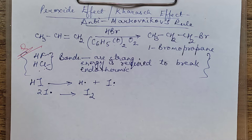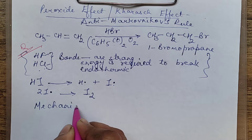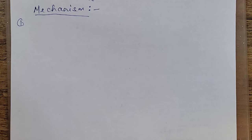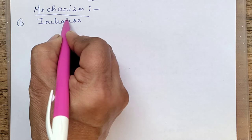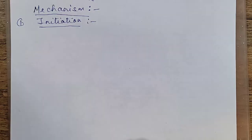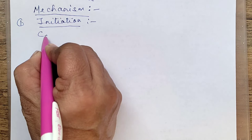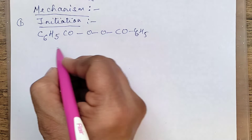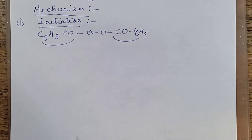Now let us see the mechanism for this reaction. At times you can be asked to write down the mechanism in a subjective paper, and mechanisms are very important to answer multiple choice questions as well. The first step in the mechanism is the chain initiation step. In the initiation step, it is carried out in the presence of benzoyl peroxide. We write benzoyl peroxide as C₆H₅CO–OO–COC₆H₅, where the O–O single bond is called the peroxide linkage.